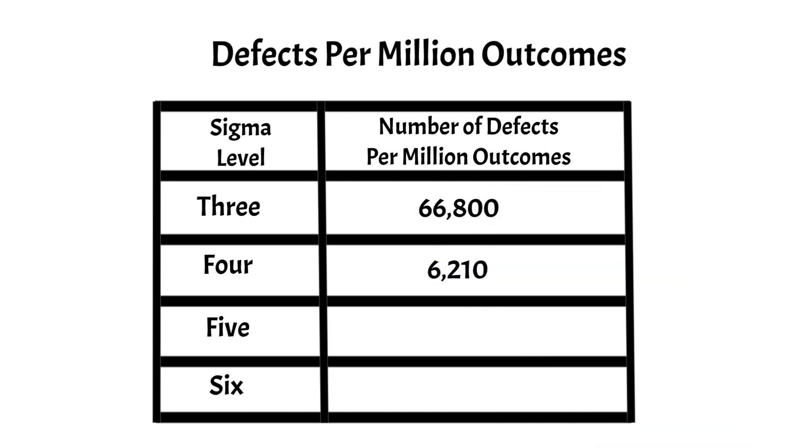For a 4 Sigma process, we expect 6,210. For a 5 Sigma process, we expect 230. And then for a 6 Sigma process, as you can see the familiar 3.4 defects per million outcomes.